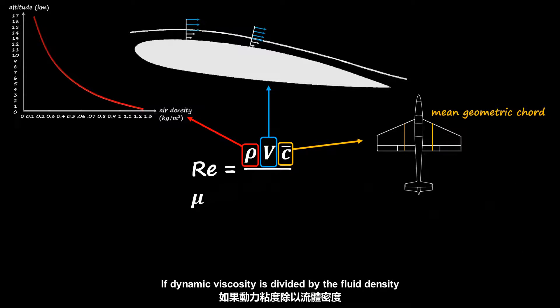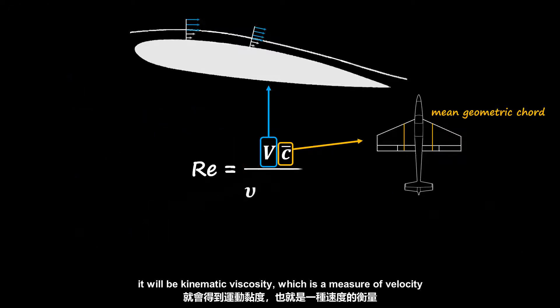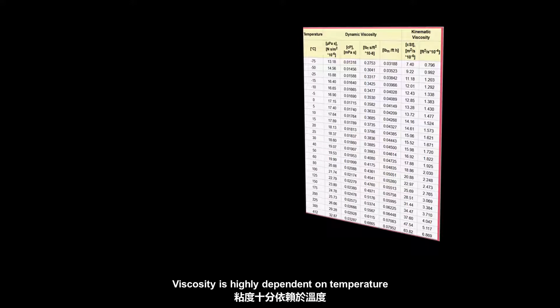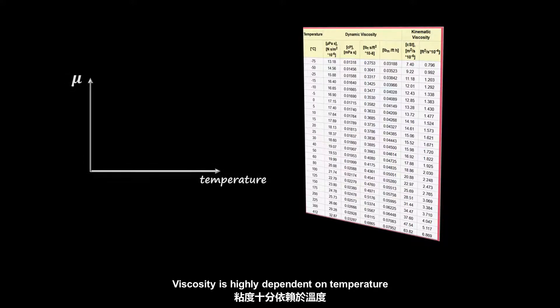If dynamic viscosity is divided by the fluid density, it will be kinematic viscosity, which is the measure of velocity. Both kinematic and dynamic viscosity of air can be acquired from a data table at engineeringtoolbox.com. Viscosity is highly dependent on temperature. As temperature increases, air viscosity increases.